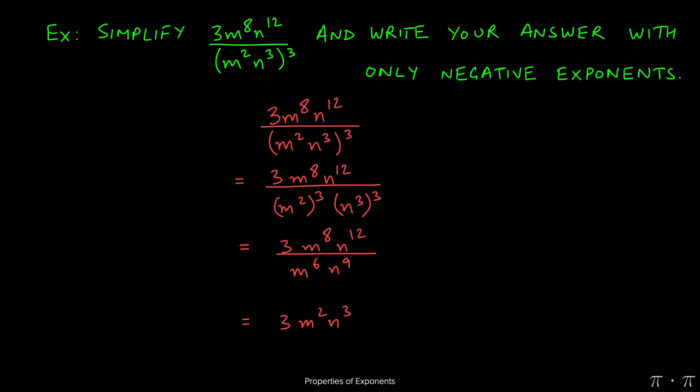The 3 comes as it is because there's nothing dividing it in the denominator. m to the 8th divided by m to the 6th is going to be m squared.